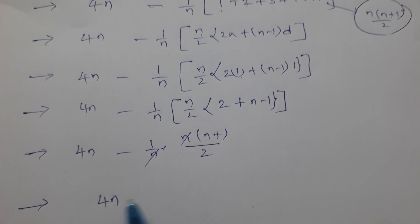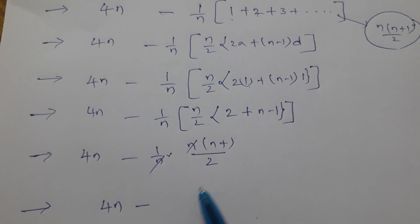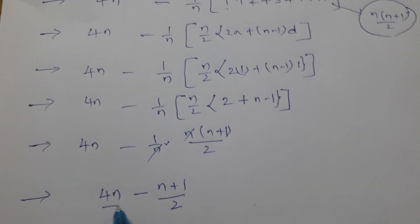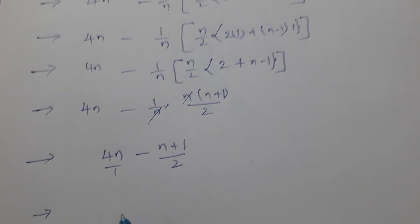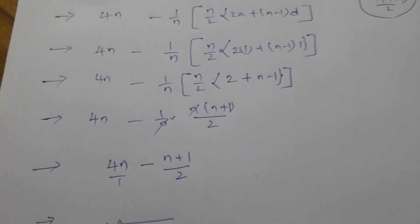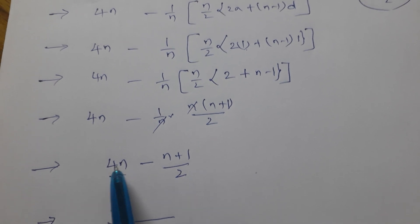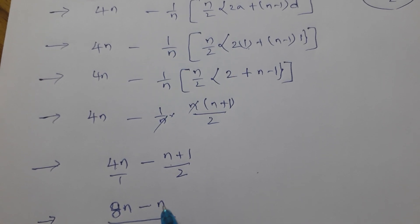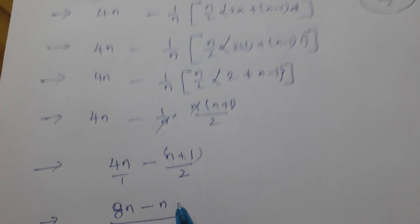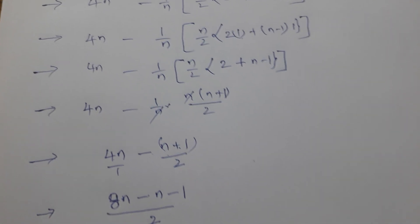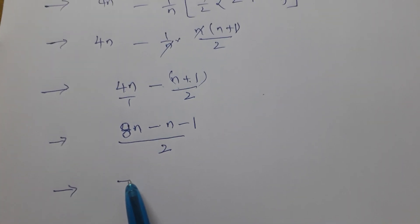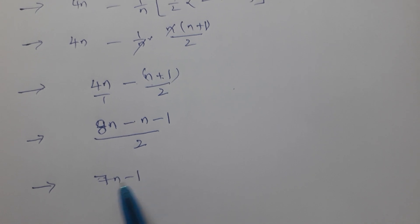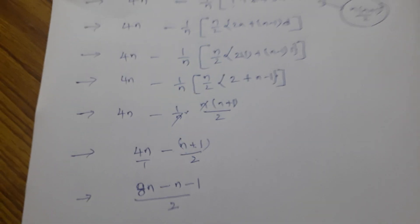So we have 4n minus (n+1)/2. Taking LCM of 2: (8n minus (n+1)) / 2, which gives (8n - n - 1) / 2. The final answer is (7n - 1) / 2.